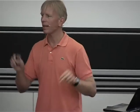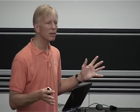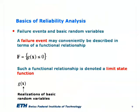A failure event in an abstract sense relates to any event for which we have interest in assessing the probability. We describe this event in terms of the function g, which is the limit state function, using parameters x which are related to the outcomes of basic random variables.